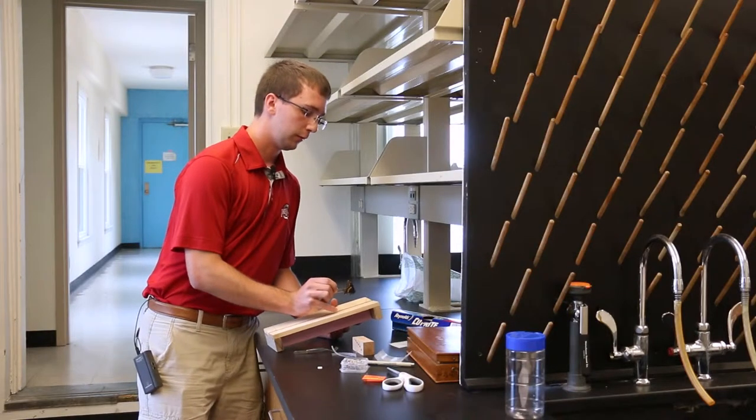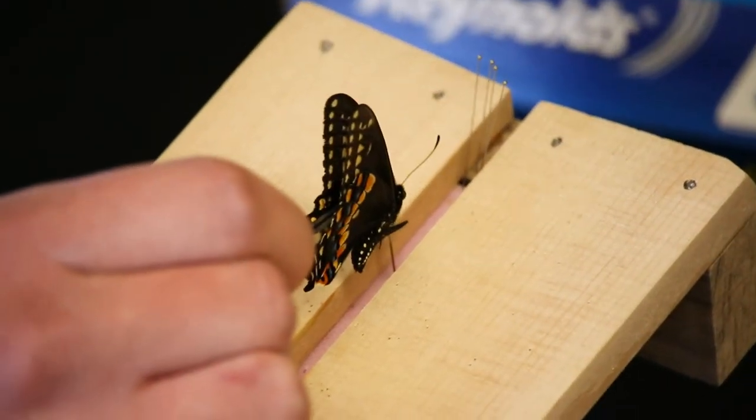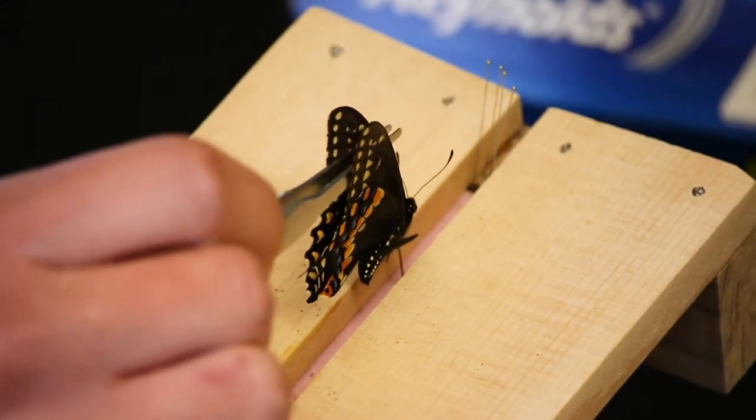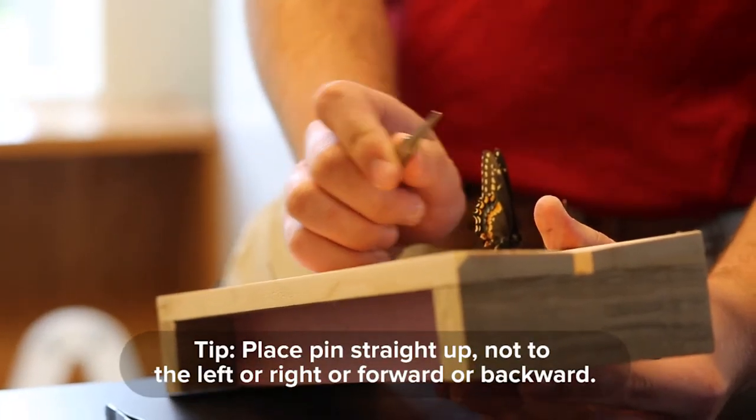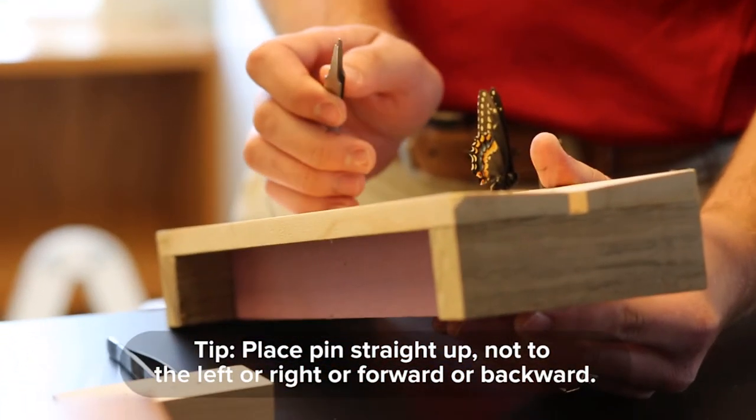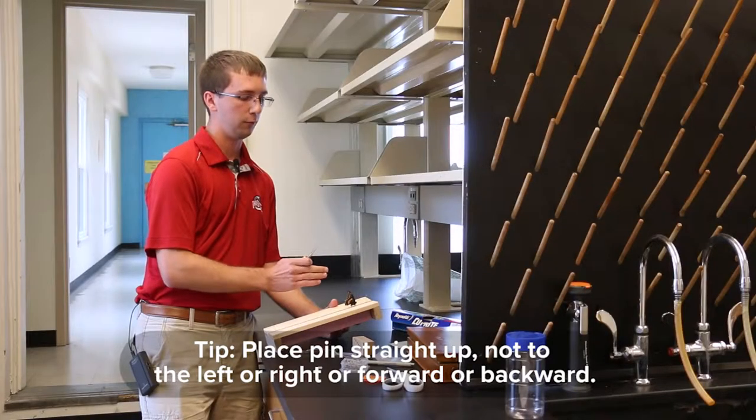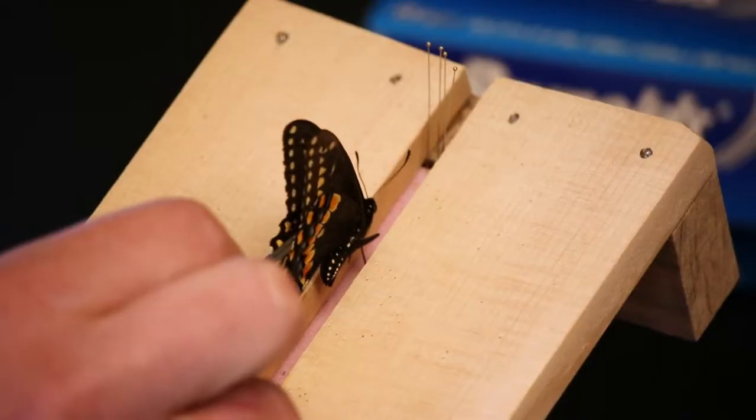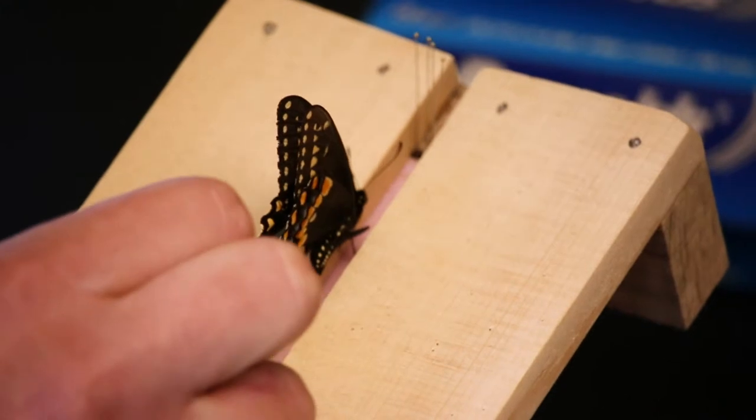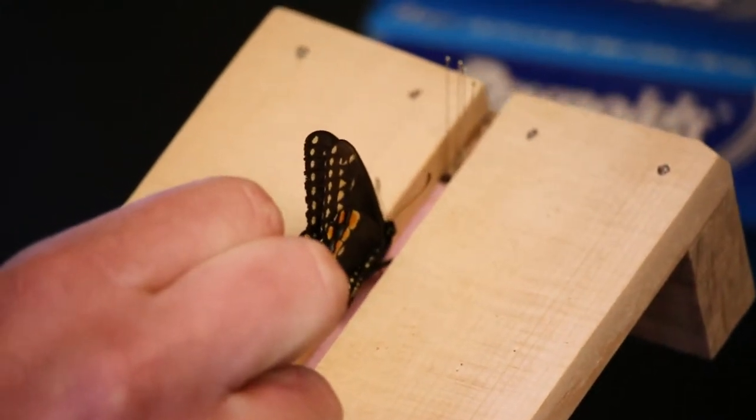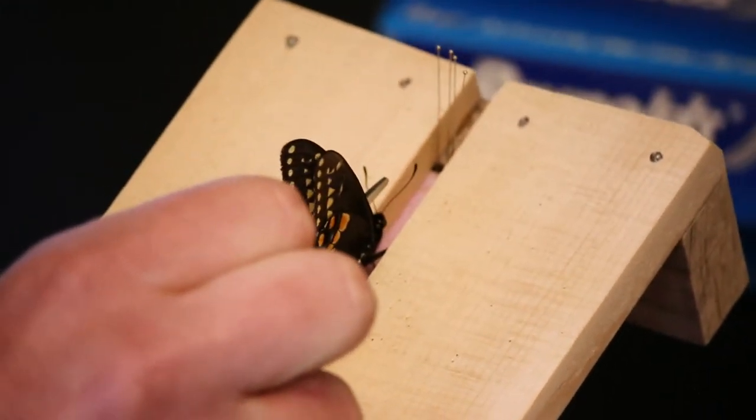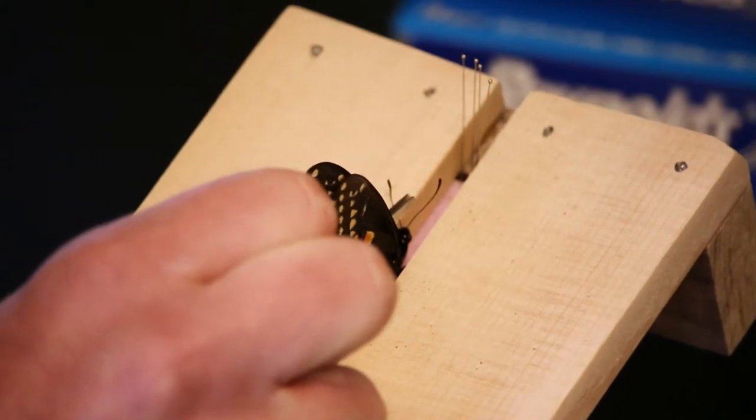You need to put the insect in the center of the groove and make sure that the pin is not going into the styrofoam at any angle to the left or the right or forwards or backwards. I take the pin with my forceps again and push the insect down so that the wings are level with the spreading board surface.